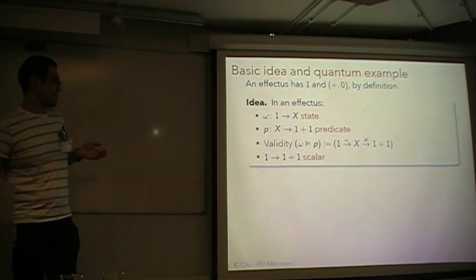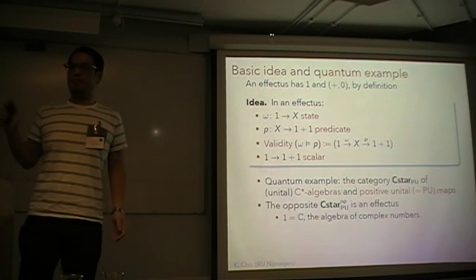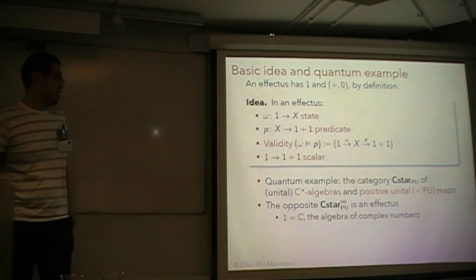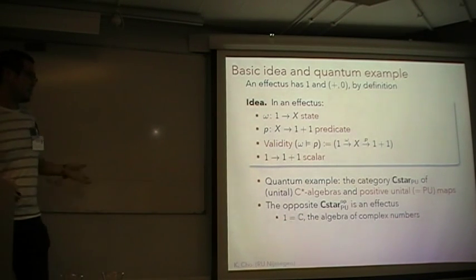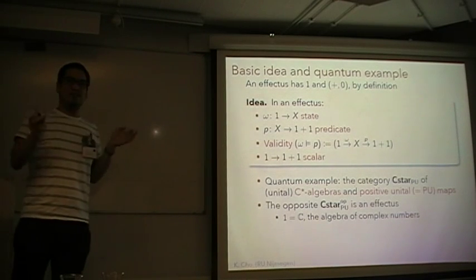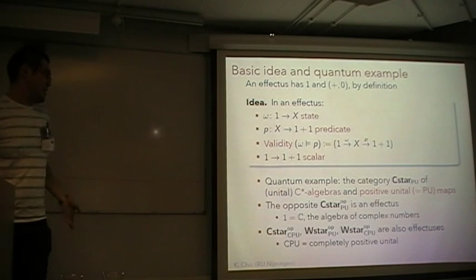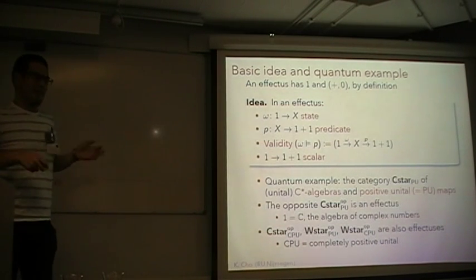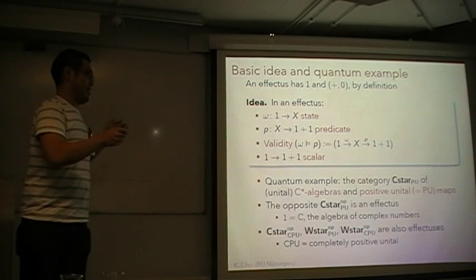To see how it works, I would like to give a quantum example given by C*-algebras and positive unital maps. The opposite category is an effectus. Note that here the final object is given by the complex numbers. In fact, these categories are also effectuses, and for many reasons these categories are better, but I would like to use this simplest example to explain effectuses.